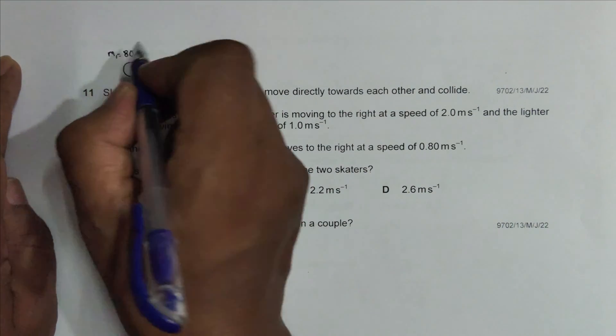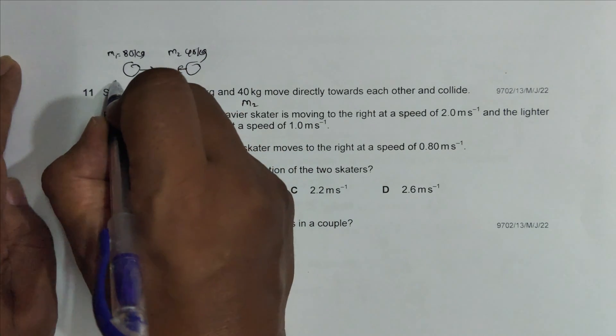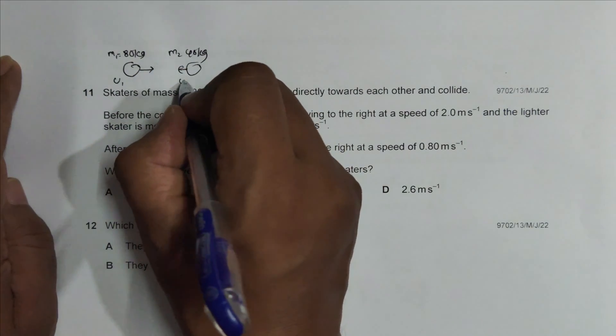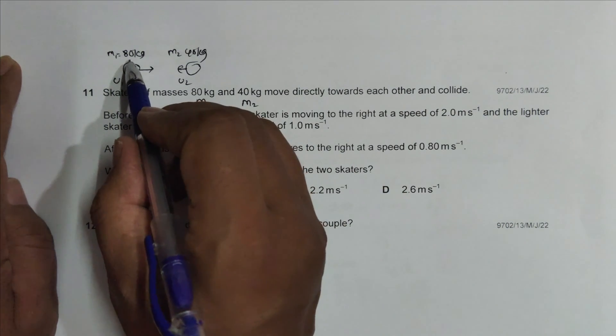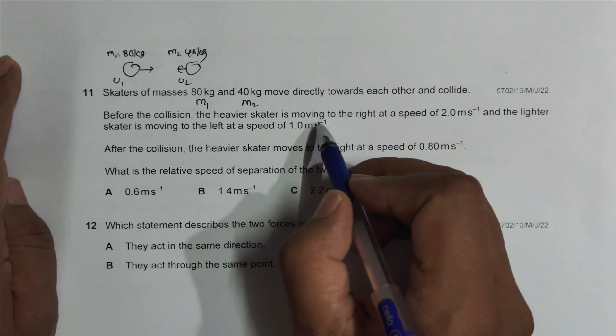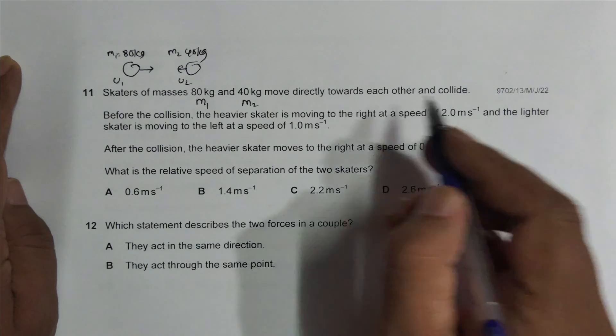which is m1, which is m2. So this is u1, this should be u2. Before the collision, the heavier skater, which means this 80 kg, is moving to the right at a speed of 2 meter per second,